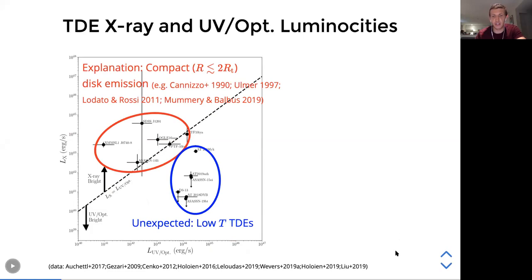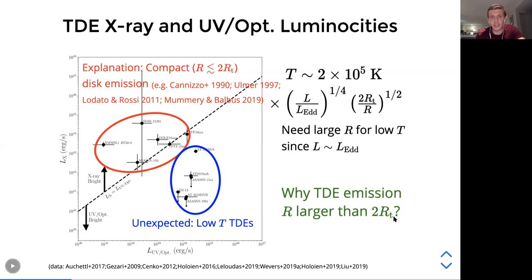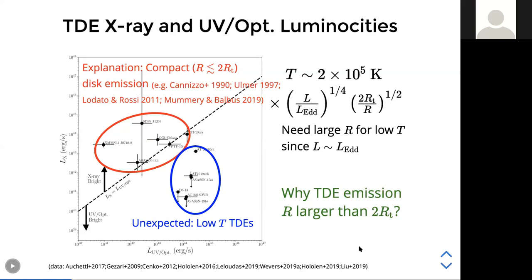To remind ourselves why it's hard to explain these low-temperature TDEs: the compact accretion disk model implies a peak temperature of order 10^5 degrees Kelvin and a luminosity of order the Eddington luminosity. In order to get the temperature for these optical TDEs so low, you need an emission area much larger than the expected outer radius of a compact accretion disk formed at the circularization radius. We're going to discuss one possible way to alleviate this discrepancy.